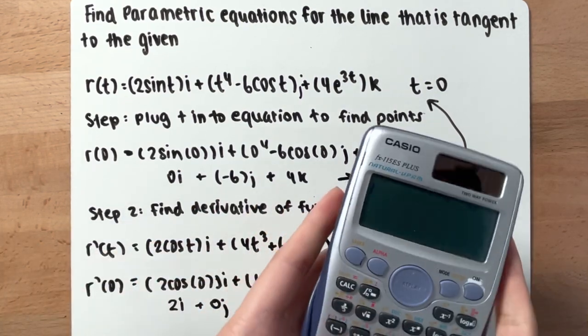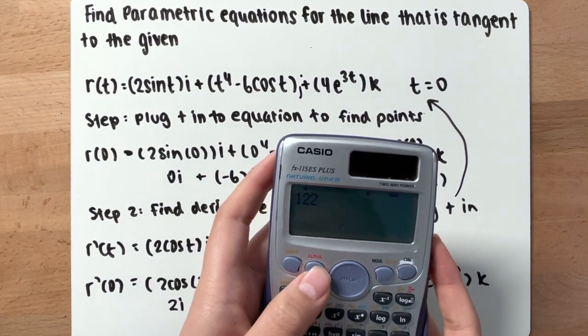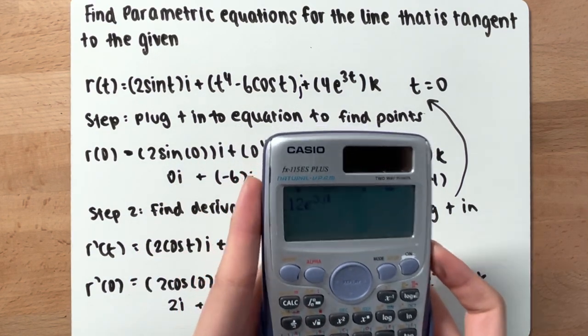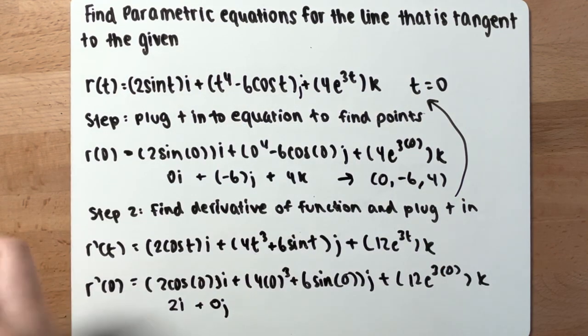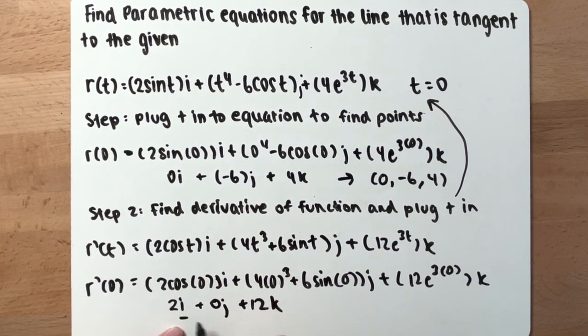And then 12e to the 3 times 0 power, you have 12k. Okay, you can disregard these components because we're gonna put t after them.